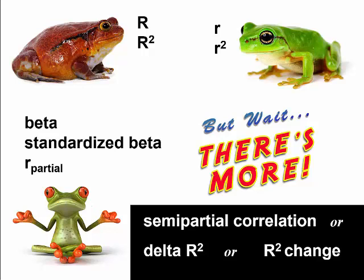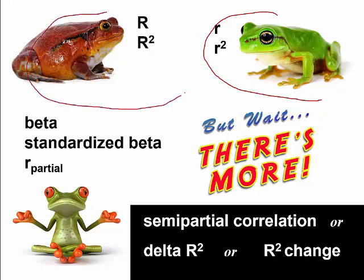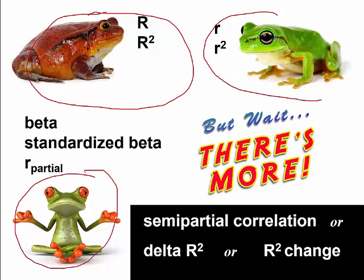This is part D for unit 5 on multiple regression. We've been going through three questions that we can address with multiple regression, represented by three frogs. The first question was about the green tree frog: what is the effect of each x variable on an outcome ignoring all the others? The second was what is the effect of all the x variables taken together on an outcome? And the third was the effect of each x variable controlling for the others.